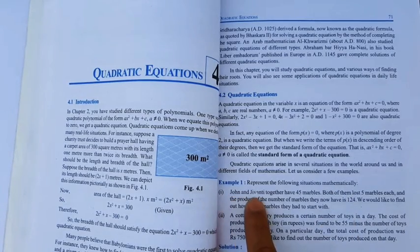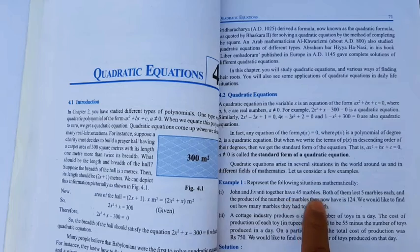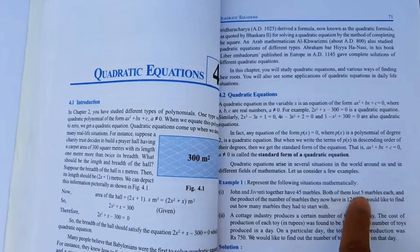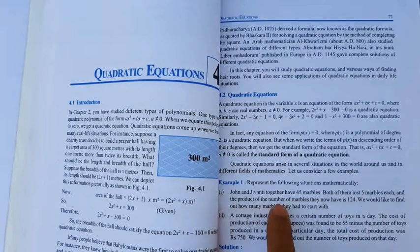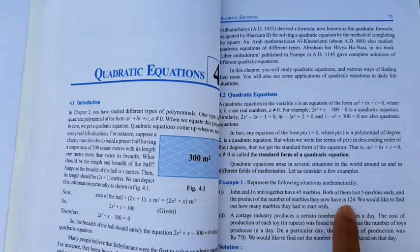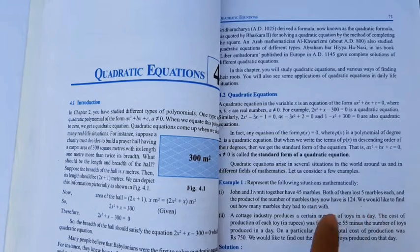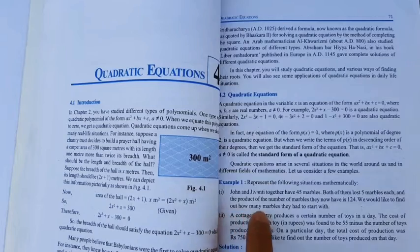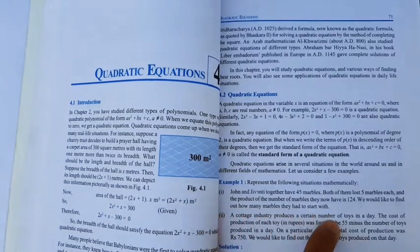Johan and Zivanti together have 75 marbles. Both of them lost 5 marbles each, and the product of the number of marbles they now have is 124. We would like to find out how many marbles they had to start with.